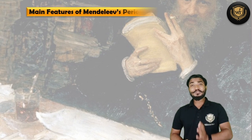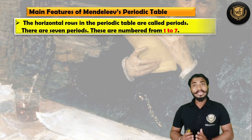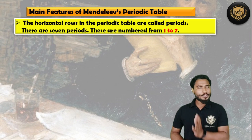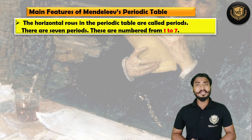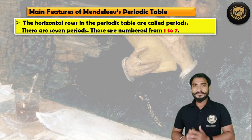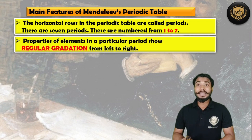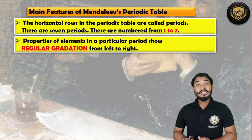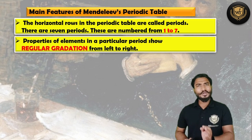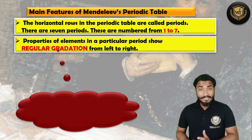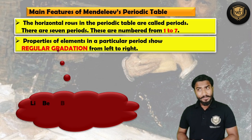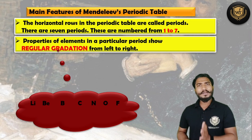Let us now move to the features of Mendeleev's table. As you know, in his table the horizontal rows were termed as periods. There were total 7 periods numbered from 1 to 7, and the elements arranged in a period were showing a regular gradation. To understand regular gradation, let us consider a few elements in a period: Lithium, Beryllium, Boron, Carbon, Nitrogen, Oxygen, and Fluorine.